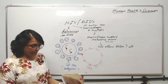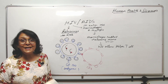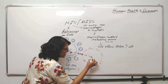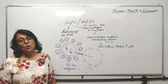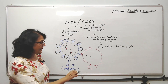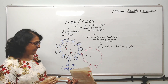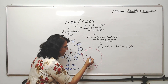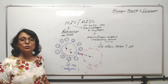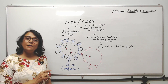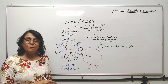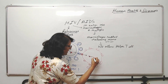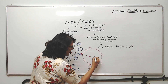The GP120 and CD4 proteins form a passage through which the genetic material — the viral RNA — is injected into the host helper cell. The RNA is not injected alone; it brings its enzyme (reverse transcriptase) along with it into the helper cell.